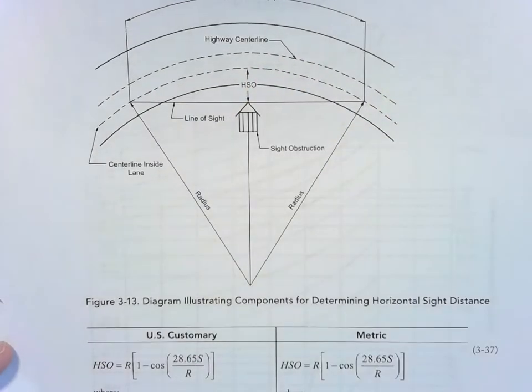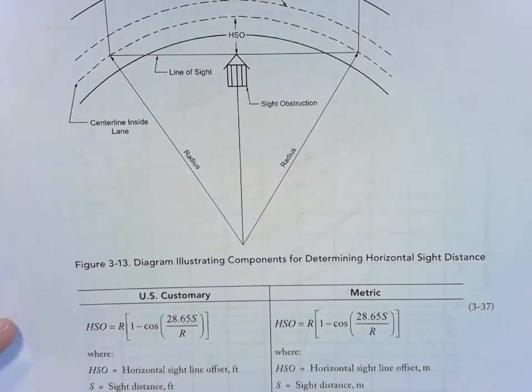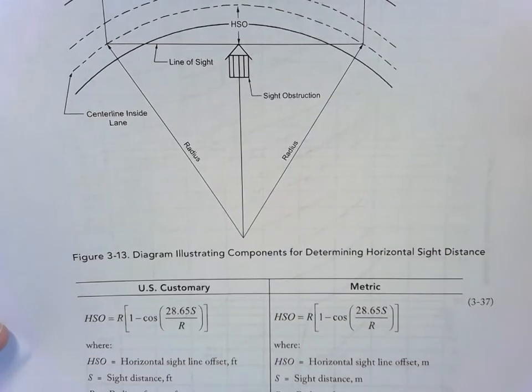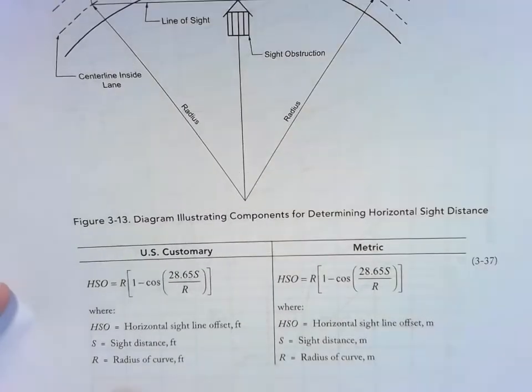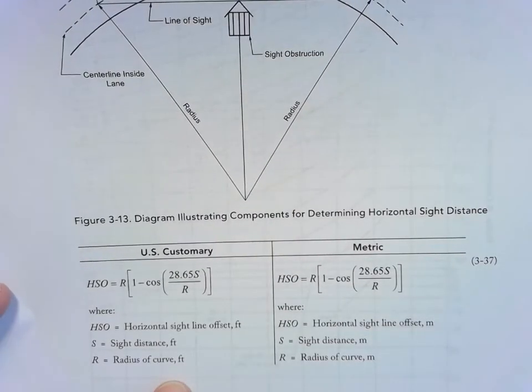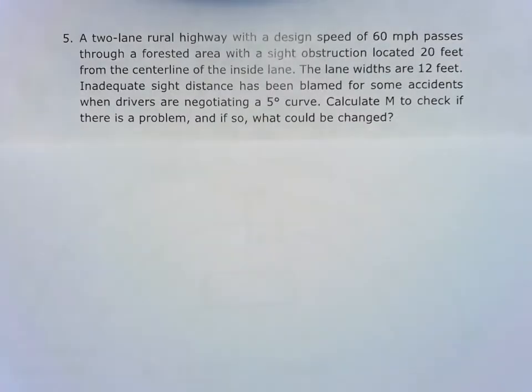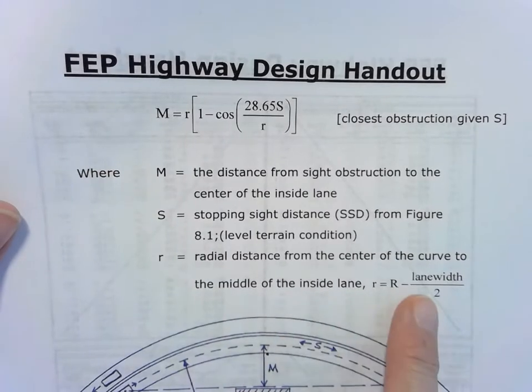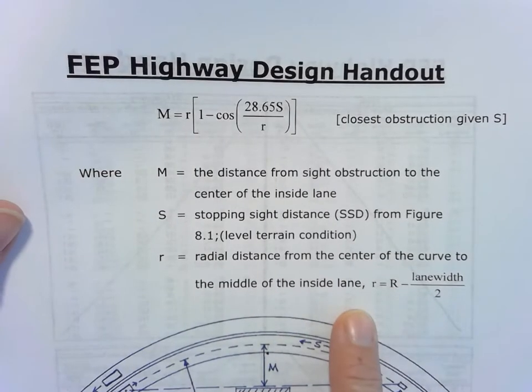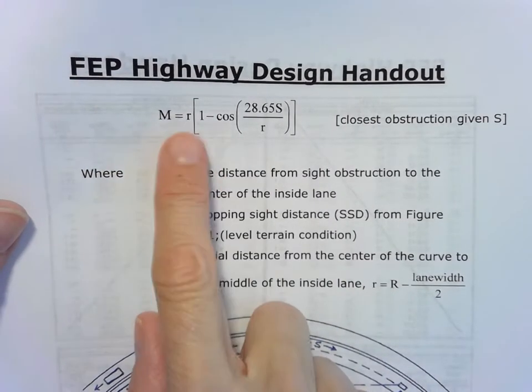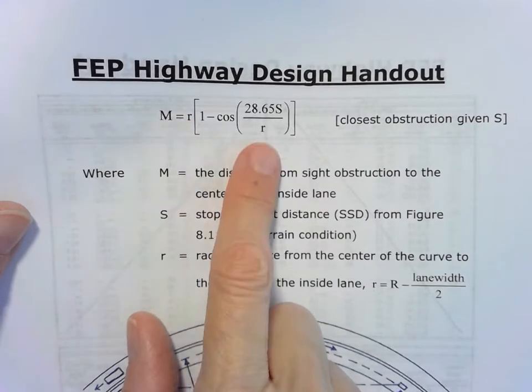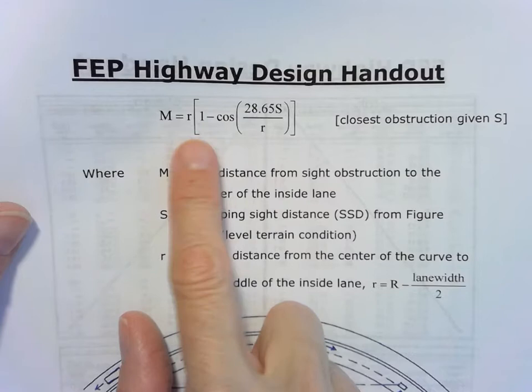Another difference is that this drawing just uses the radius of the curve, so we have an R here that represents the radius of the curve. When we've been doing these calculations, we've been using a small r, which is the radial distance from the center of the curve to the middle of the inside lane. So instead of using small r here, the new AASHTO 2018 Green Book uses a capital R here.